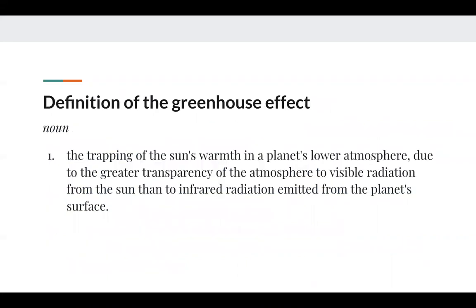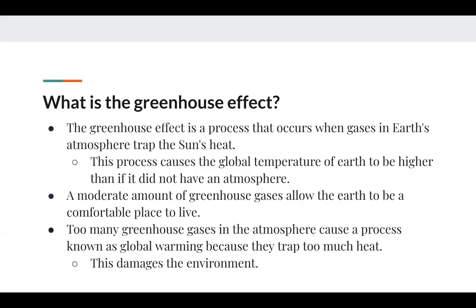The greenhouse effect is the trapping of the sun's warmth in a planet's lower atmosphere due to the greater transparency of the atmosphere to visible radiation from the sun than to infrared radiation emitted from the planet's surface. This process causes the global temperature of Earth to be higher than if it did not have an atmosphere — Earth's temperature is much warmer than Mars's. A moderate amount of greenhouse gases allows the Earth to be a comfortable place to live, where the weather is not too hot or too cold, allowing optimal conditions for all organisms on the planet.